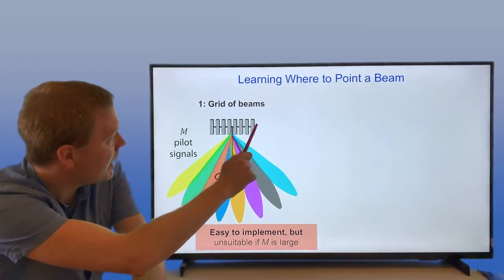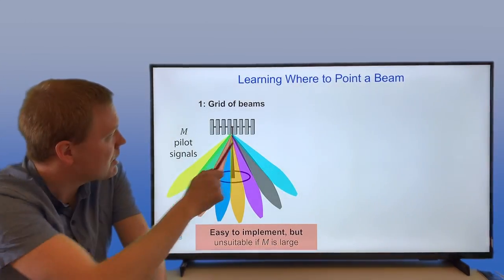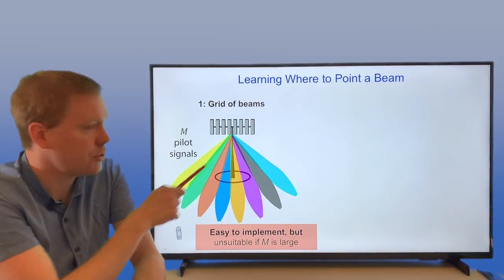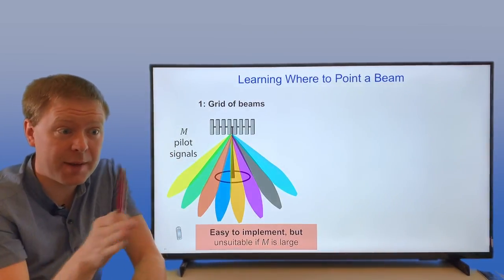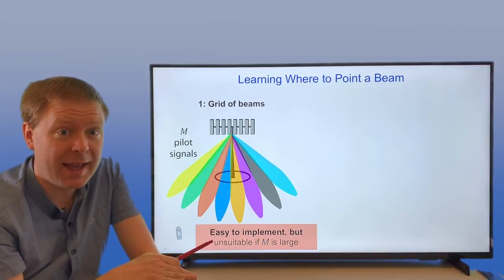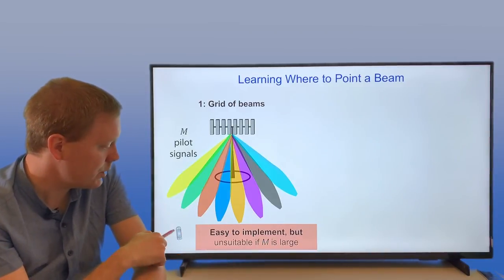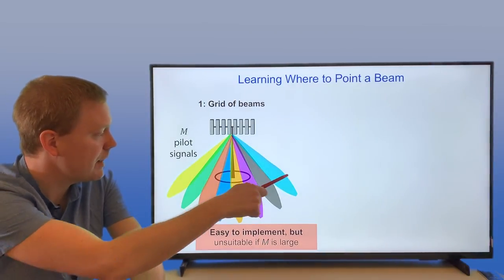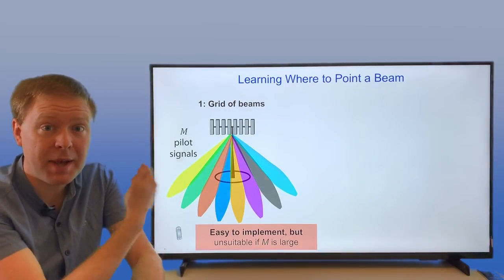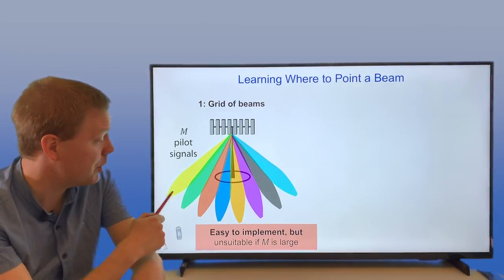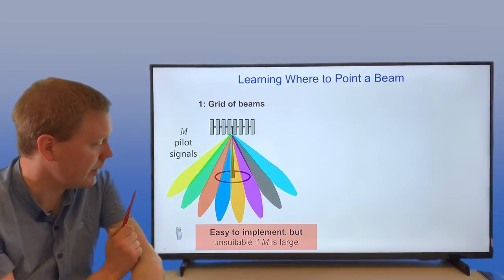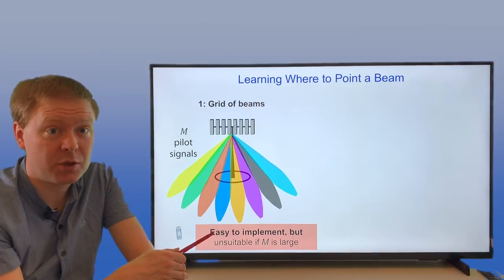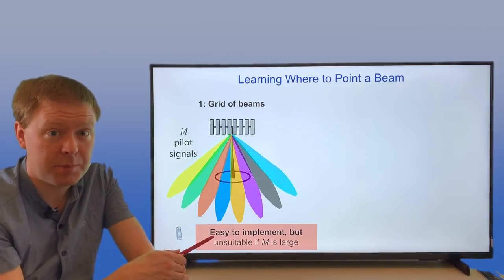is that you can send M different so-called pilot signals pointing in M orthogonal directions. In that way, you can let the user device here measure the signal that it receives for each of the beams, and then it can feed back an index and tell the base station, 'I preferred, in this case, the red beam here.'